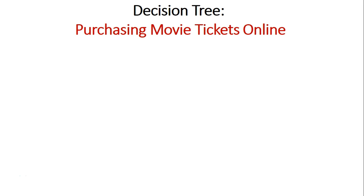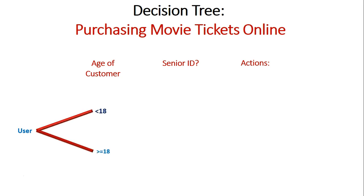To start off with, we're going to get our conditions across the top again. That will be the age of the customer and whether or not they have a senior ID. Then once again a section for where the actions are going to take place. So let's begin with our user — firstly, the age of the actual customer. They're either going to be younger than 18 or greater than or equal to 18. Now if we branch down the under-18 pathway...